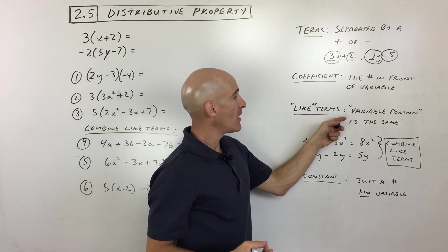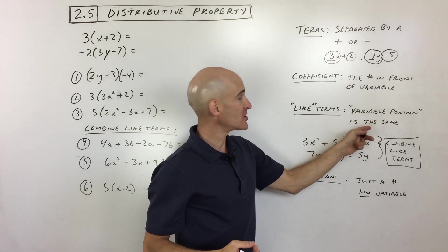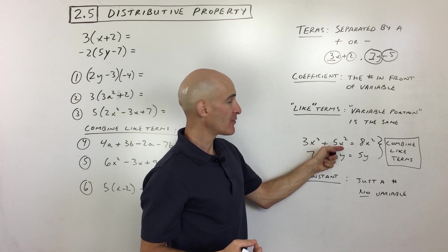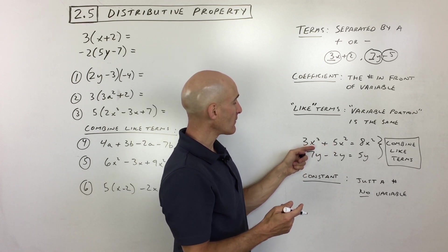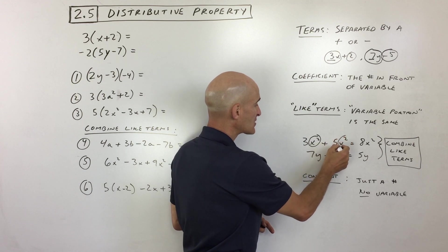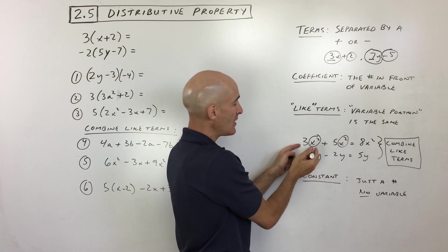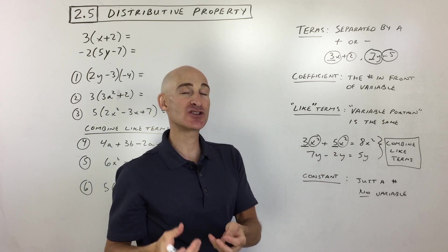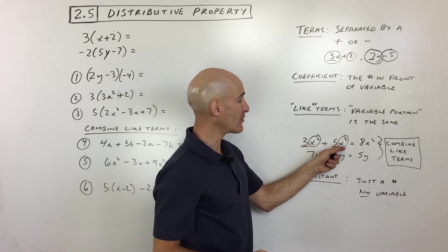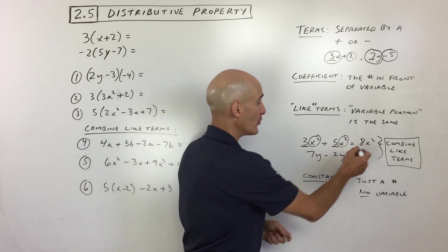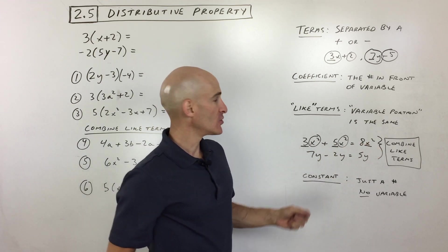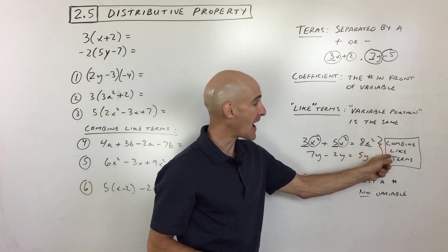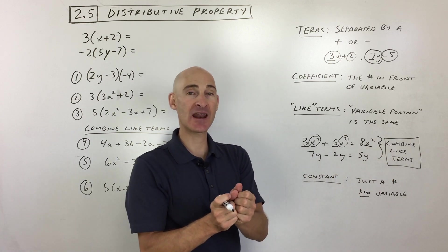Like terms are terms where the variable portion is the same. So what do I mean by that? Well, say for example, this one, 3x squared plus 5x squared. These are like terms because you can see that we've got x squared, x squared. The variable term is the same. The 3, the coefficient in front, the 5, the coefficient in front, tells us how many of that term we have. We've got 3 of those plus 5 of those. That's 8 of those. See, 8x squared, 8 of that group. So coefficients, the number in front, you just want to make sure the variable portion is the same. And then you can do what's called combining like terms, combining or adding or subtracting them together.